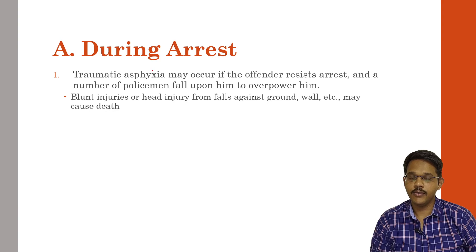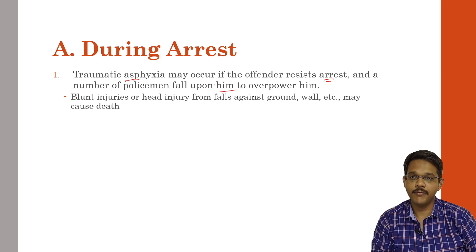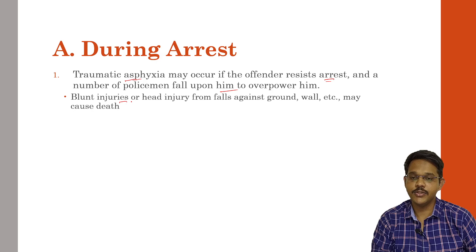During arrest, the person may die because of traumatic asphyxia, where when the offender is arrested, a number of police officers fall upon him and overpower him. It may happen when the person is trying to escape — multiple police officers may fall on the person and because of that the person may not be able to breathe, leading to traumatic asphyxia and death. This may also lead to blunt injuries to the chest or a head injury from falls against the ground or wall, which may result in death.